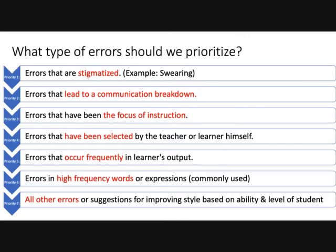And finally, any other errors or suggestions for improving style based on ability and the level of student. With really advanced students who don't make any mistakes at all, you want to suggest places to improve by including things like imagery or dialogue or other great stuff like that.